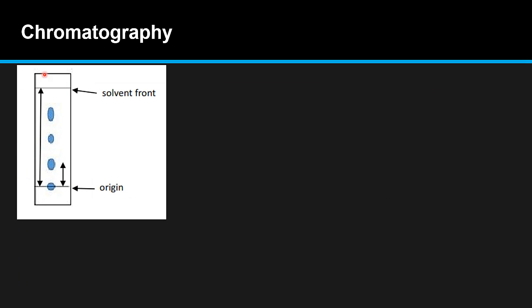Here we have our chromatogram. This was our origin where we put the spot, the mixture of amino acids, and they've separated out according to their different solubilities in the mobile phase and the stationary phase. The next thing we're going to do is identify which amino acids they are.